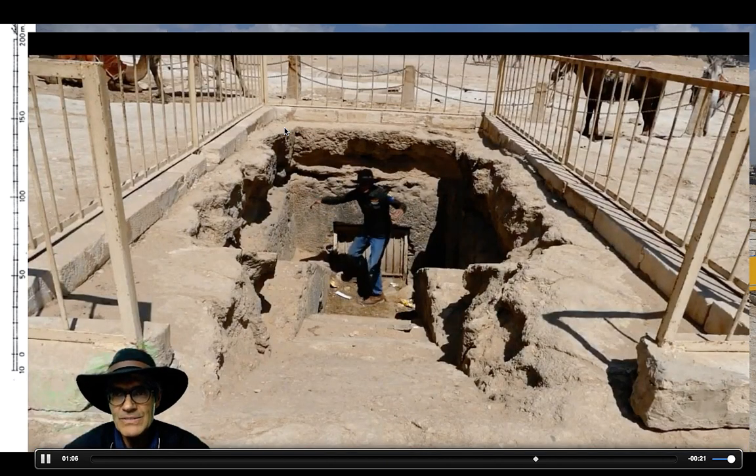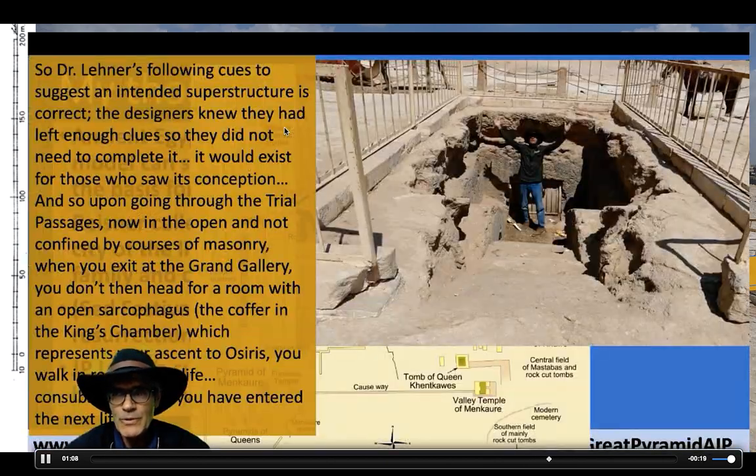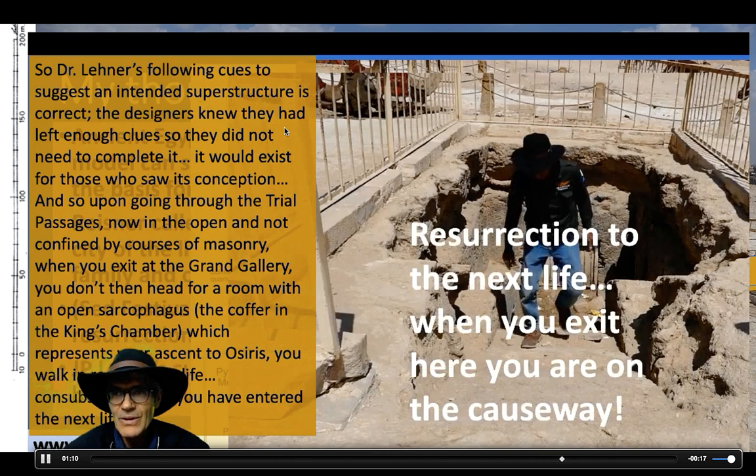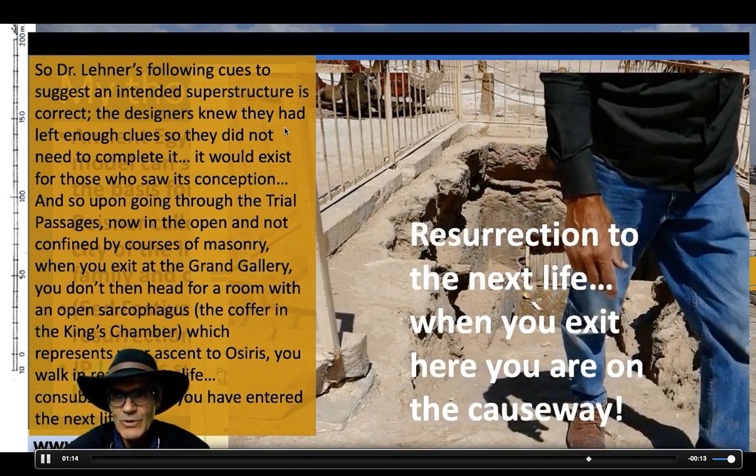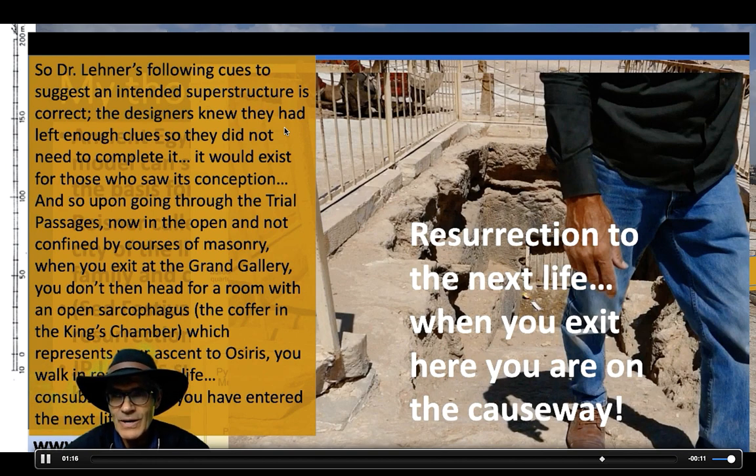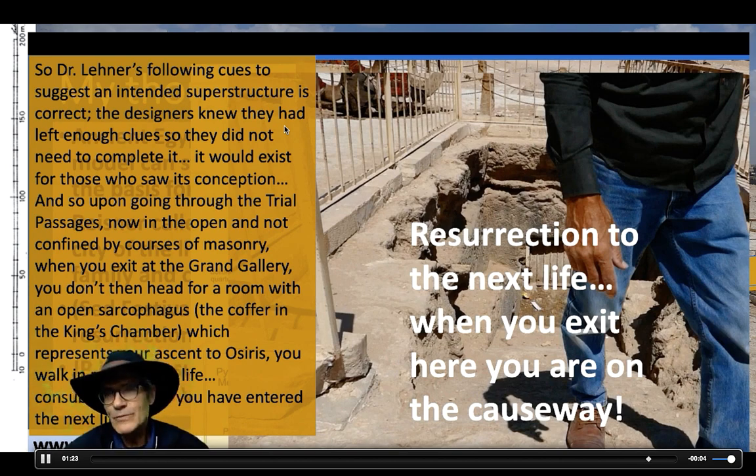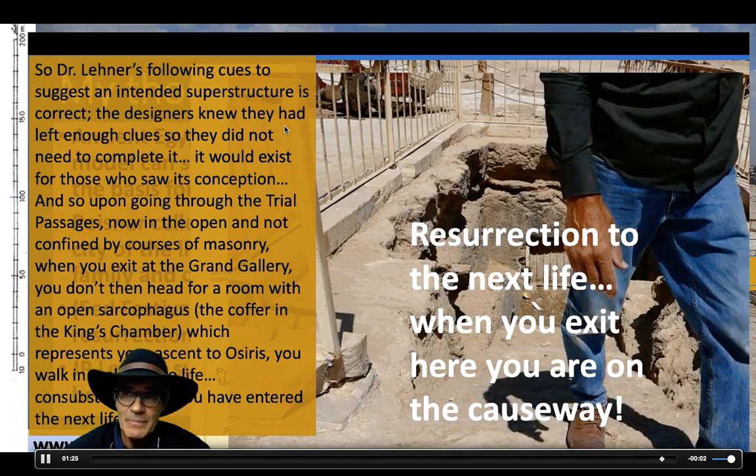In other words, you're coming out of this, there's the claustrophobic point, but you're in the grand gallery, and then you don't walk into a closed king's chamber. You walk out on the causeway. It's symbolic of actual resurrection, which is what the king wants for his people, and it's what God wants for all of us. That's what I think the Great Pyramid is saying.